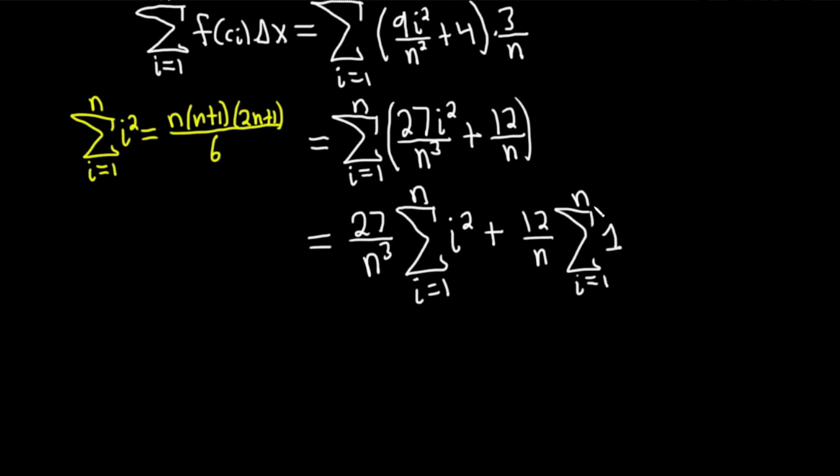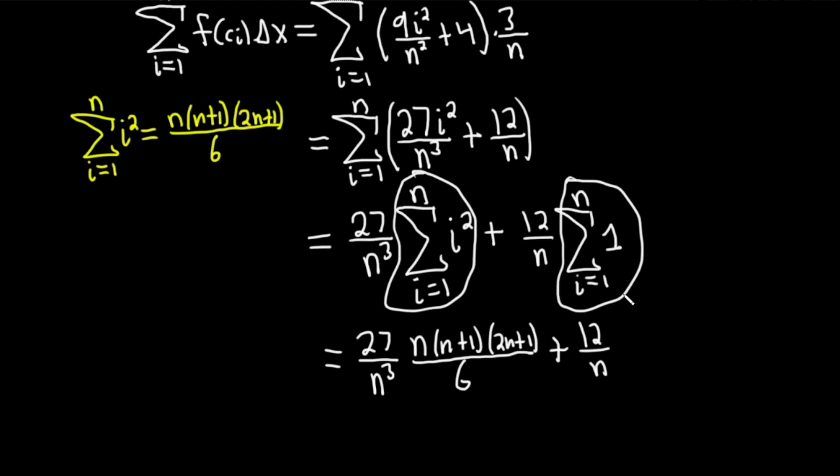And then this one is just going to be n. Whenever you add up 1 from 1 to n, you just get n. So this equals 27/n³. And let's try to write down the formula without looking. So it's n(n+1)(2n+1)/6. Very uncomfortable formula. I remember this took me a long time to memorize. So everything I've circled here is being replaced with this formula. Plus 12/n. And then everything I'm circling here is just going to be n.